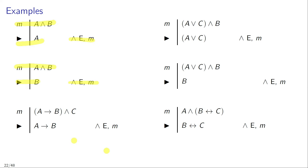The same works even if you have more complex conjunctions. For example, if in line M you have the conjunction 'if A then B and C', you can infer the first conjunct 'if A then B' and justify this by citing conjunction elimination applied to line M. Or if in line M you have the conjunction 'A or C, and B', you can infer the first conjunct 'A or C', or equally infer the second conjunct B, citing conjunction elimination in each case.